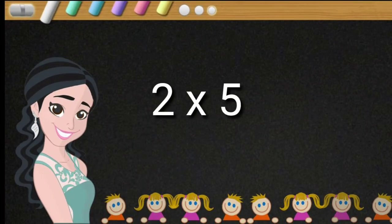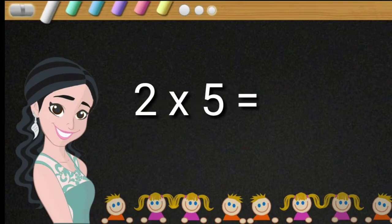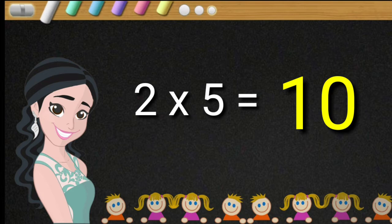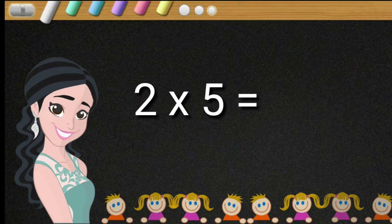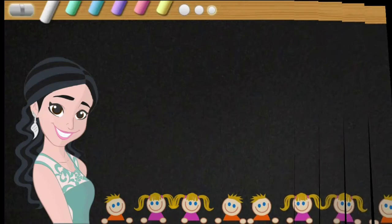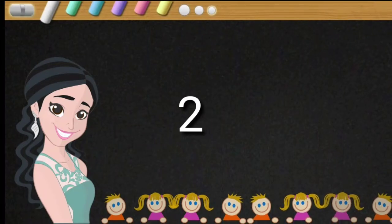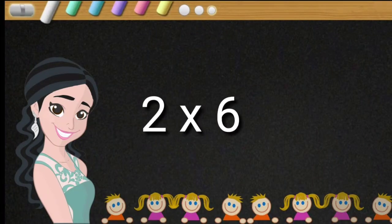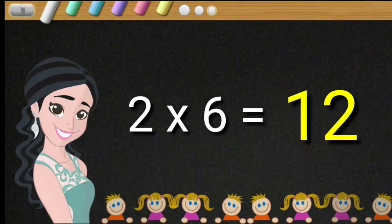Two fives are ten. Two fives are ten. Two sixes are twelve. Two sixes are twelve.